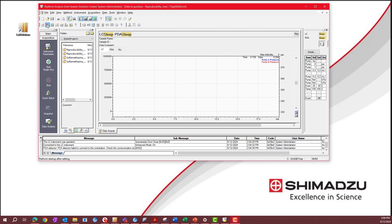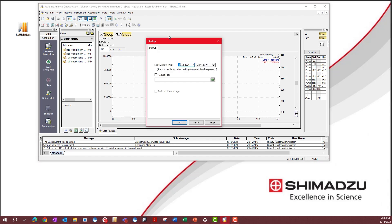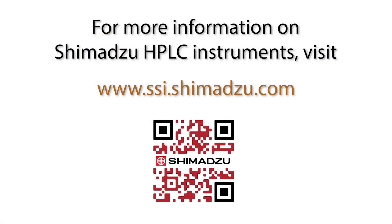Open lab solutions and initialize your system. Run your startup method to condition your system for your analysis conditions. Thank you for watching this video on replacing the deuterium and tungsten lamps on your SPD-40 slash SPD-40V UV-Vis detector.